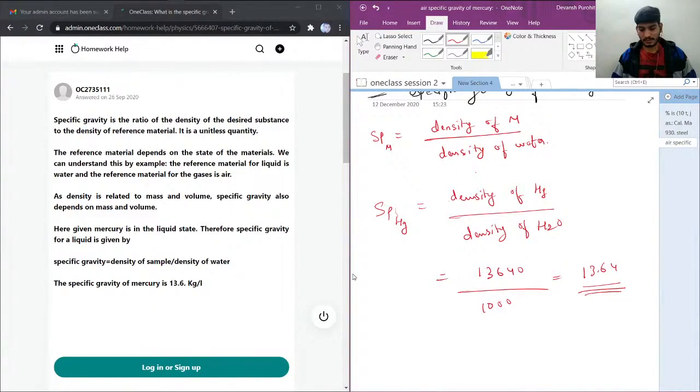So specific gravity of mercury. Density of mercury is 13.6 kg per liter and specific gravity is 13.6. Oh yeah, here we do not have any units.